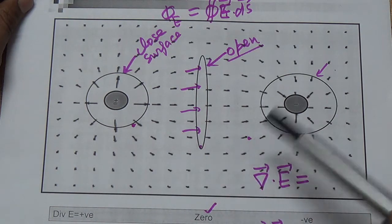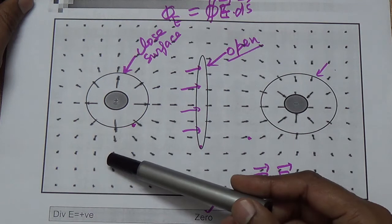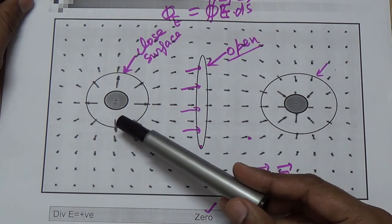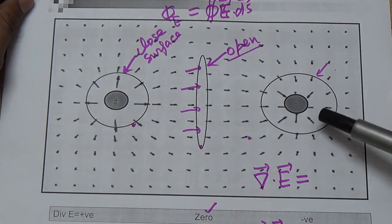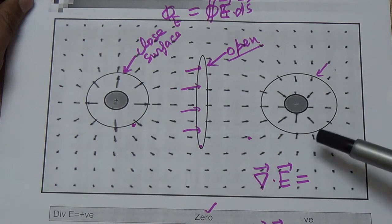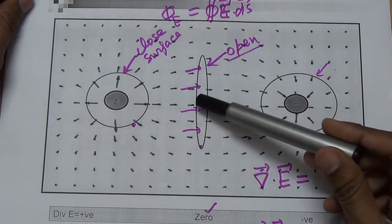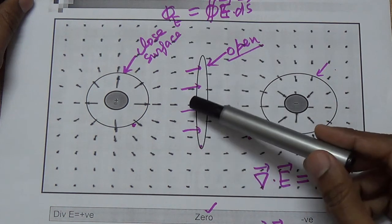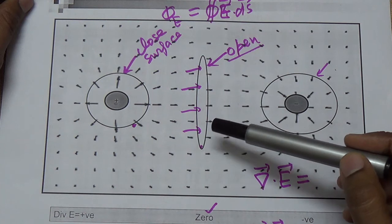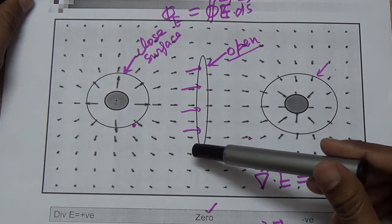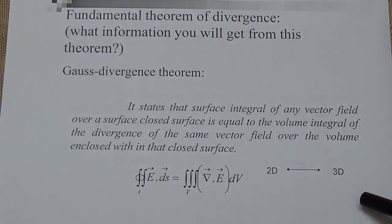In the last lecture we discussed this: when the result of the divergence of any vector field is positive, that means the field is spreading — there is a source from which field lines are coming out. When the divergence is negative, it means the electric or magnetic field lines are converging. When it is zero, it means the electric flux entering through the open surface and exiting from the other face are equal, so the total electric flux is zero. This was the physical picture of divergence.